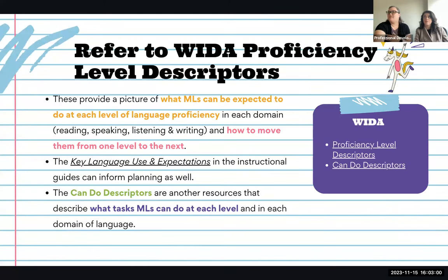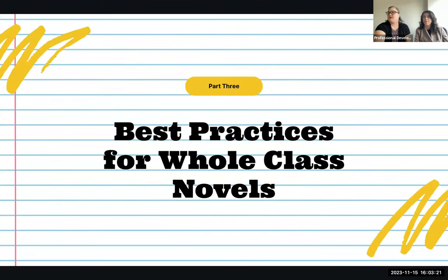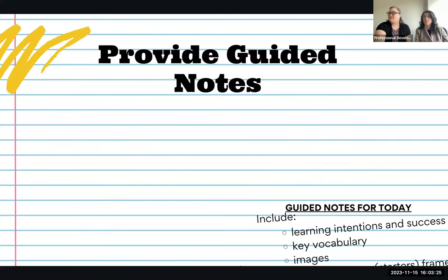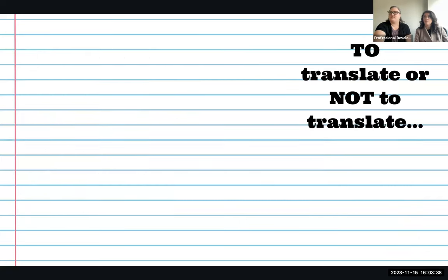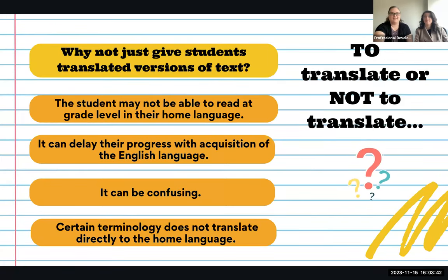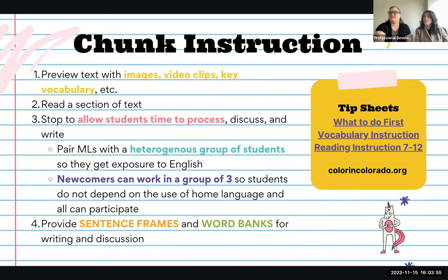We also covered making sure students have access to grade-level content and how important that is. WIDA proficiency level descriptors, based on score reports from the WIDA ACCESS assessment taken every February, help us know where students are at. The third thing we went over was whole class novels and best practices — using guided notes, cooperative learning structures, and when to translate versus when not to. Ultimately, translation is a scaffold and should be gradually taken away as students' language improves.